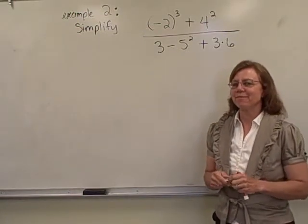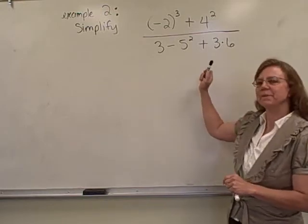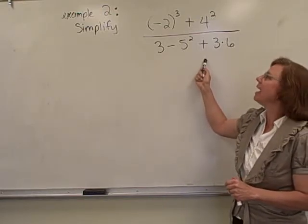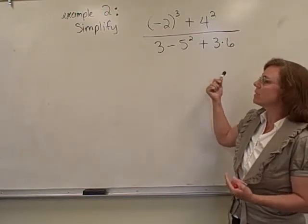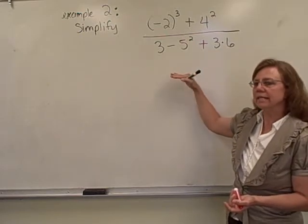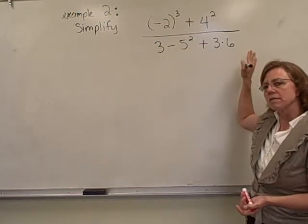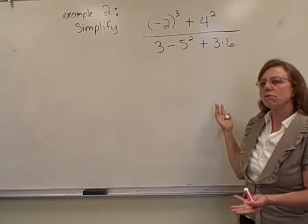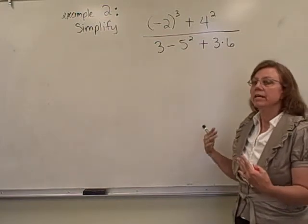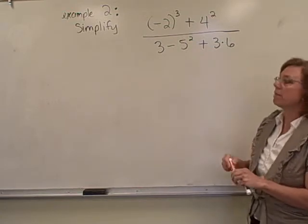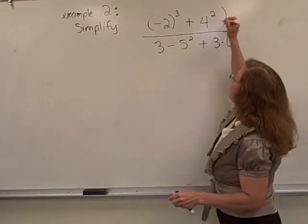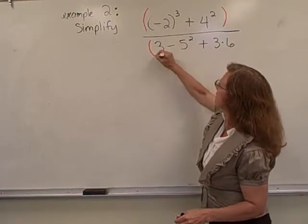For our second example of order of operations, we're going to simplify this expression. And so one more time we have to start with any kind of grouping symbols. Well, we have this big fraction bar this time, and some students don't realize that a fraction bar is really a grouping symbol, so this problem is really as if it were like this,